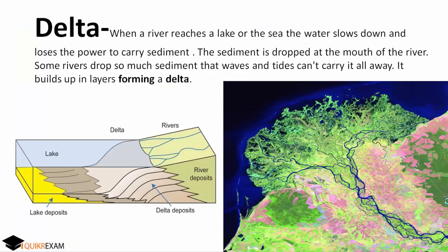Firstly, Delta. How is it formed? When a river carrying sediments falls into the sea, the speed of the river water gets slowed down and sediments start depositing at the joining point. In the left picture, the river is carrying sediments which start getting deposited at the connection point of the lake and the river, forming a layer-by-layer Delta.